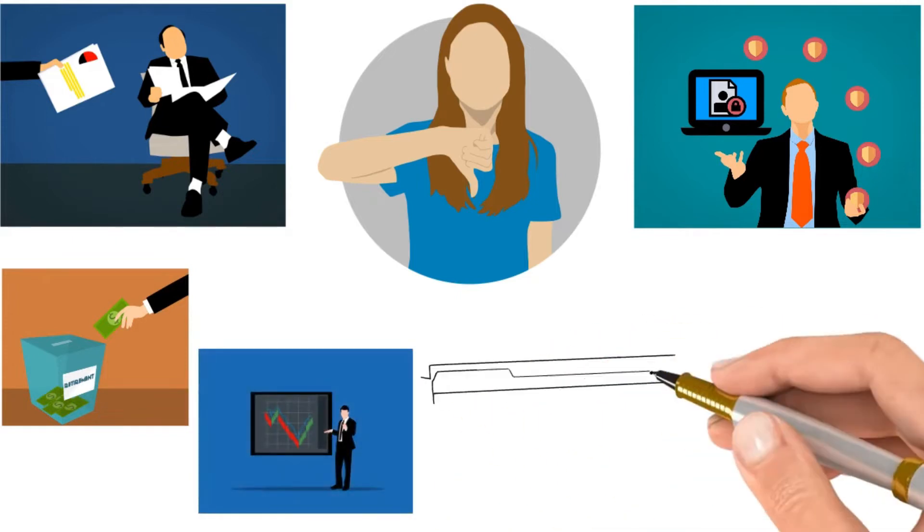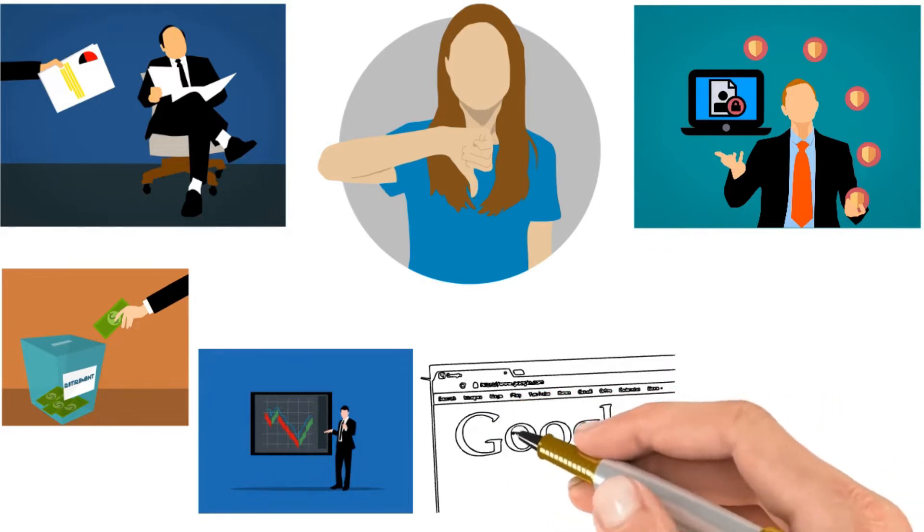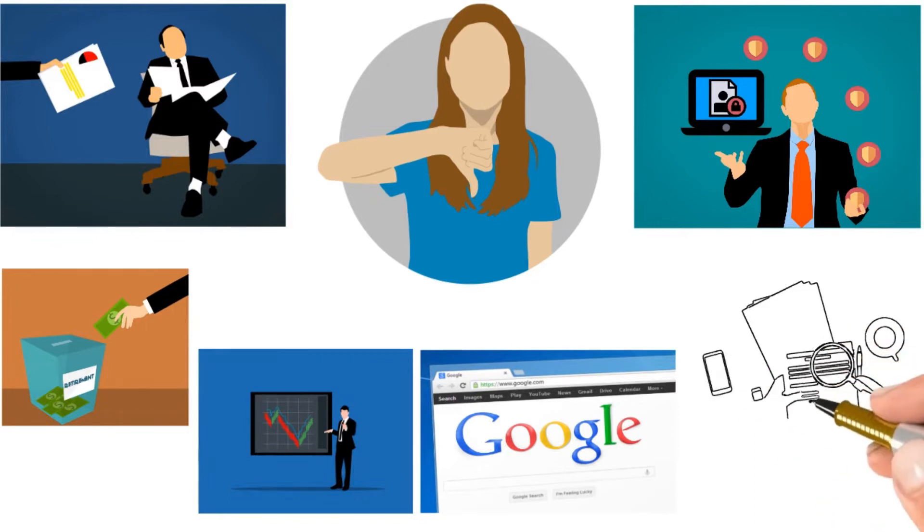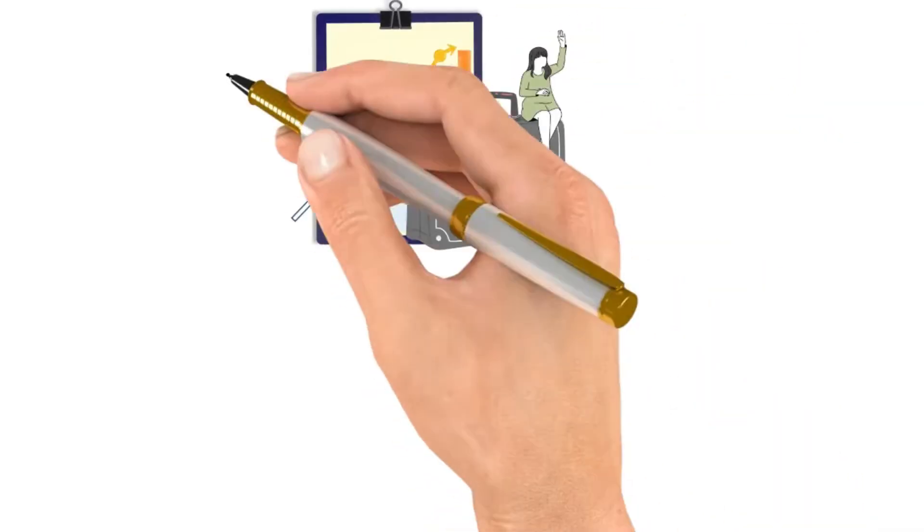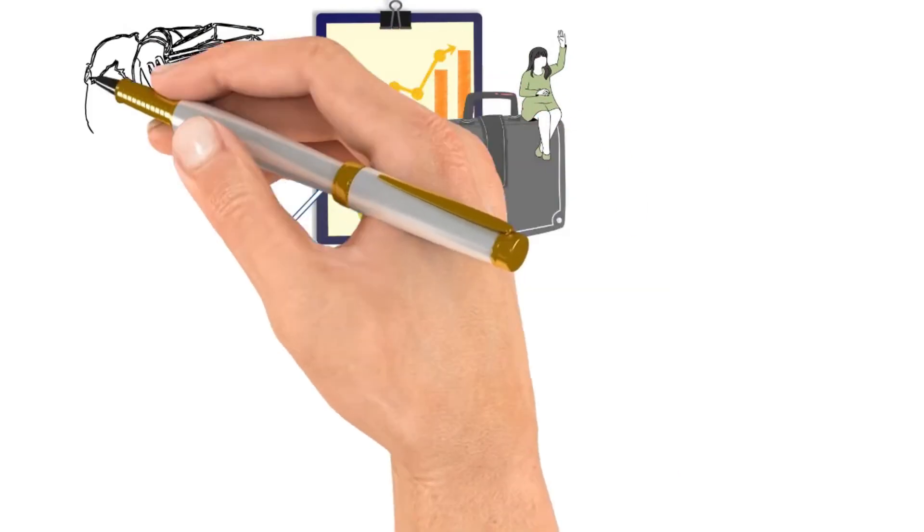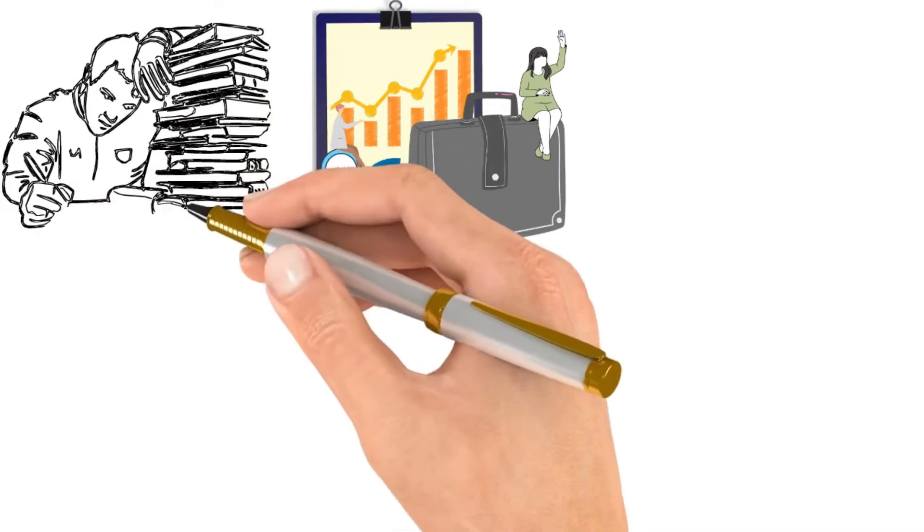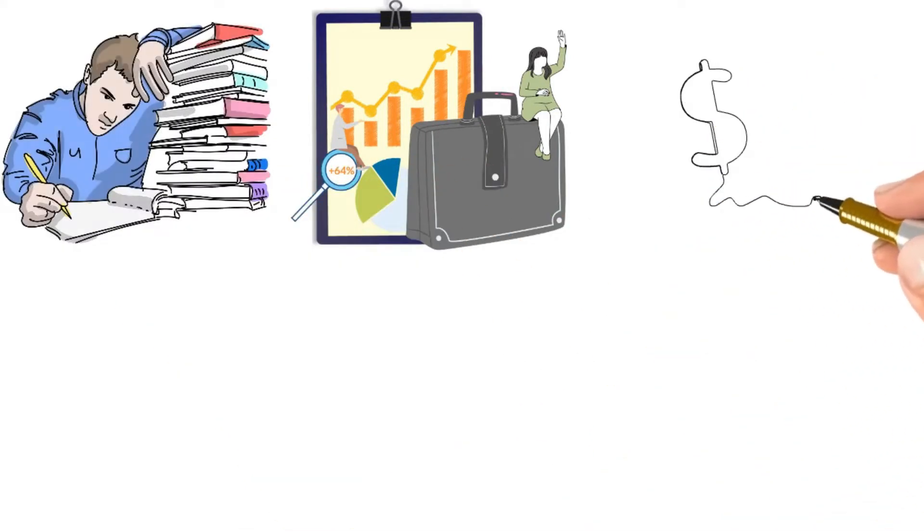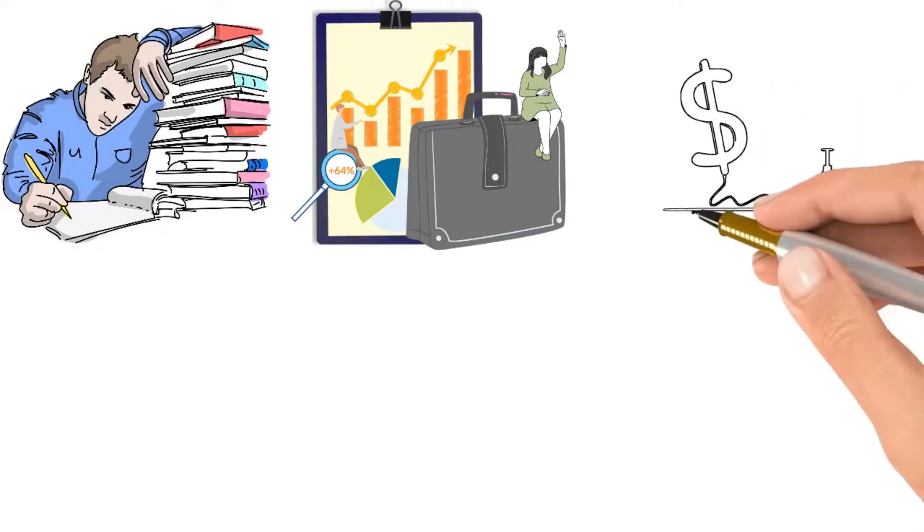If you do a fast search on Google, you will discover a myriad of different methods that may be used to get this amount. Nevertheless, the approach that I've found to be the most comprehensive is one that is based on the well-known Trinity Study. This study found that during the first year of managing your investment portfolio, you should only sell off up to 4% of the total value of your holdings. After that, the total amount of money that you're able to take out of the account on an annual basis will grow to reflect the effects of inflation.